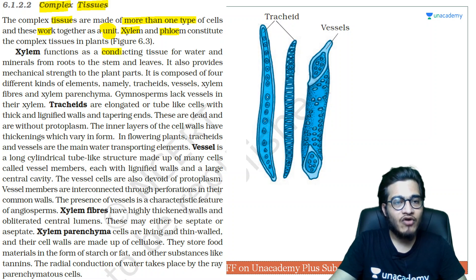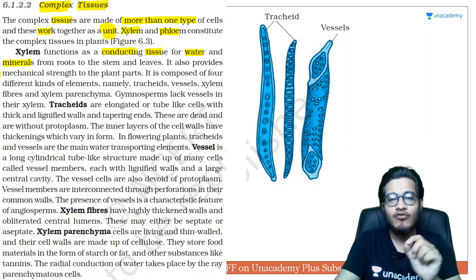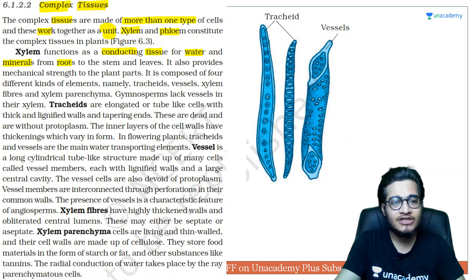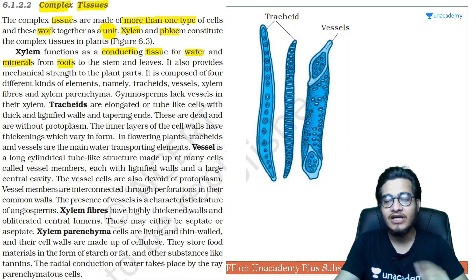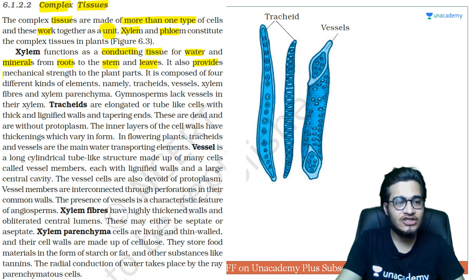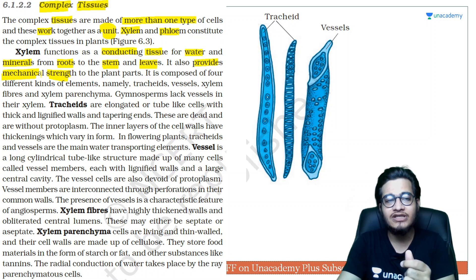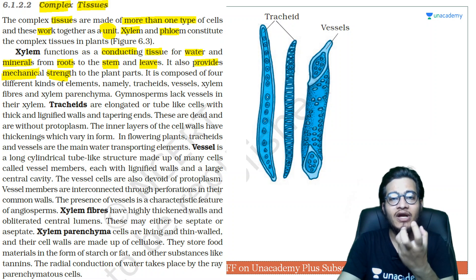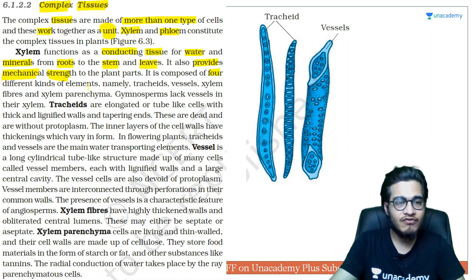Xylem is a conductive tissue that helps in water and mineral conduction. Water and minerals absorbed by roots are transported upward to stems and leaves by xylem. They also provide mechanical strength because dead fibers are present, which are coated with lignin, giving them strength. Xylem is composed of four different kinds of elements.